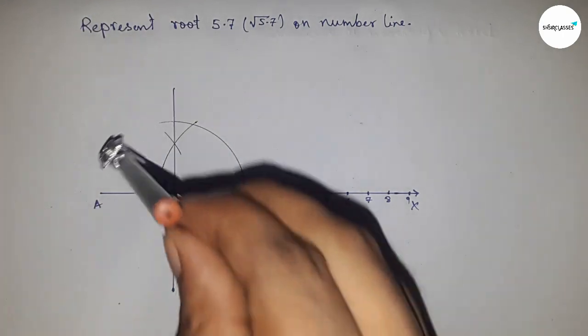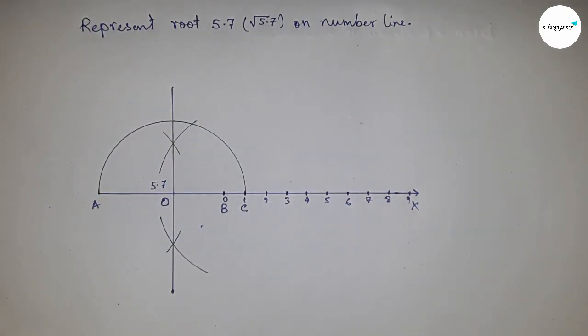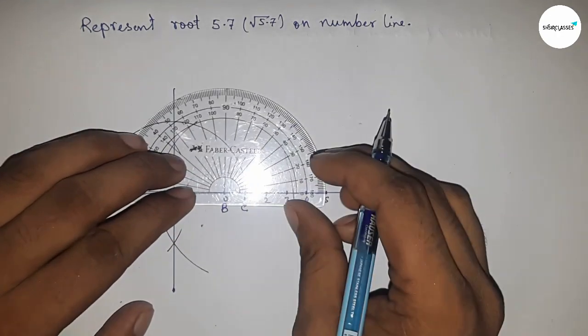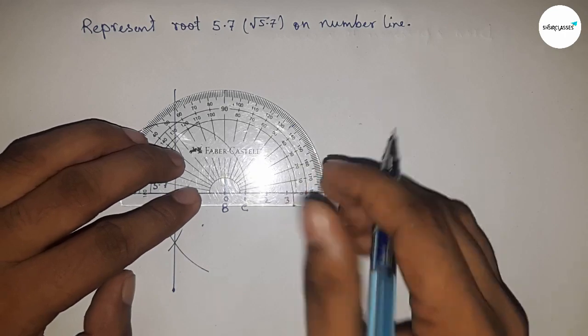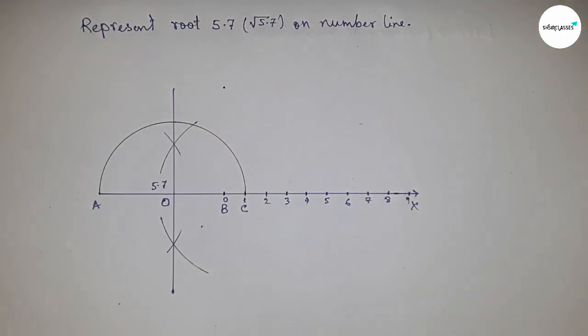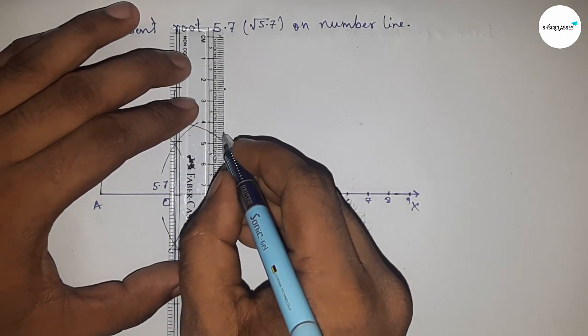Now, taking the distance OA and OC, we draw a semicircle through points A and C. Next, we draw a 90-degree angle at point B using a protractor.